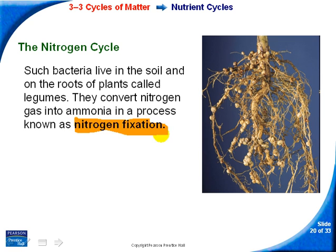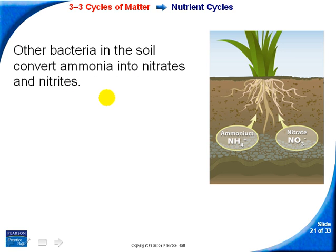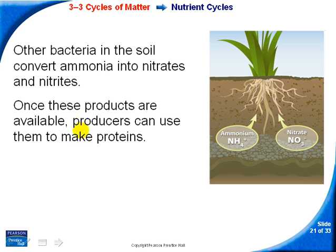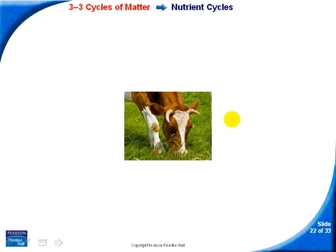Nitrogen-fixing bacteria live on the roots of plants. They can do a process that converts nitrogen gas into a chemical called ammonia. Bacteria in the soil can also convert the ammonia into nitrates and nitrites. These nitrates and nitrites can then be taken into the plant, so now we're starting to see it cycle through.